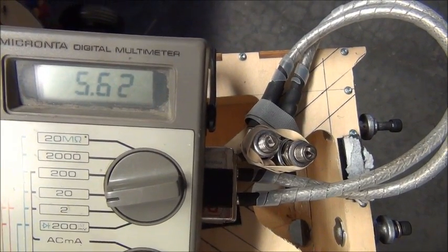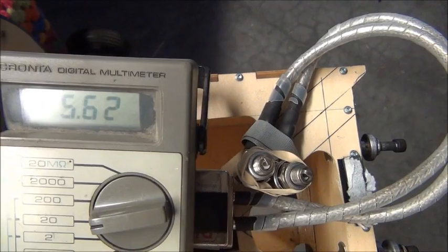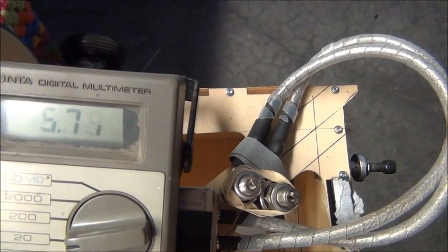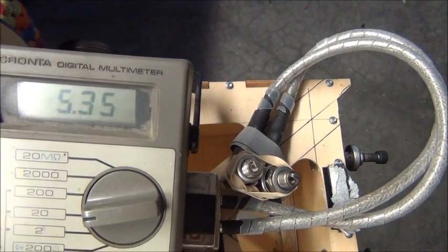So we turn our ignition on and we're running there about 400 RPMs, and you see we're holding about 5.62 volts. And when we increase, that's about 7,000 RPM.